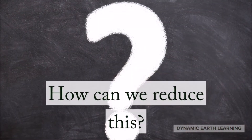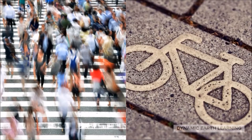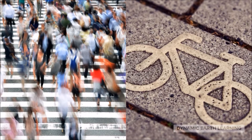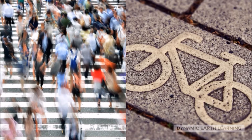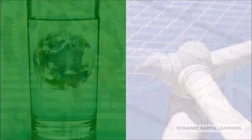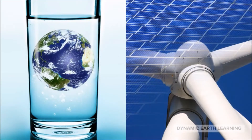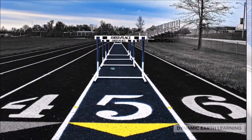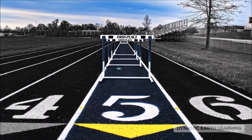How can we reduce this? Making different choices about transportation, like walking or riding a bike, will help reduce air pollution. We can also use water more wisely and save energy by considering alternatives to gas and oil, like solar or wind power. Let's explore in more detail the five major air pollutant sources.